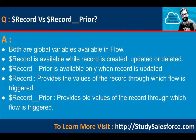What is the difference between $Record versus $Record__Prior? Both are global variables available in flow. $Record is available when a record is created, updated, or deleted. $Record__Prior is available only when a record is updated. $Record contains the new state of the record with all field values. $Record__Prior contains the old version. When we update a record, we have two states — new and old. $Record__Prior provides the old value of the record through which the flow is triggered.